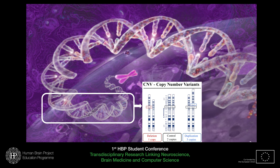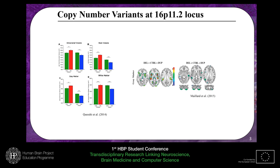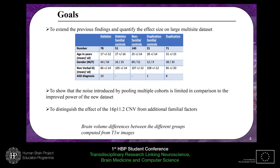Both deletion and duplication are associated with autism. From previous studies, we already know some phenotypic aspects associated with this CNV, and from an anatomical point of view, only two studies explored global and local brain differences in terms of brain region volume. But these studies had low sample sizes and limited analysis, so our goal was to expand the previous findings and quantify the effect size on a larger multi-site dataset.